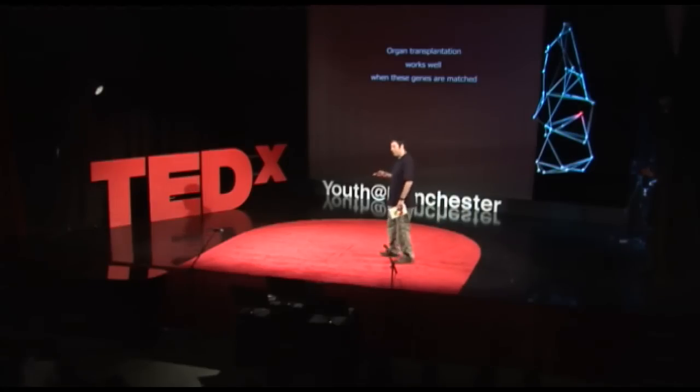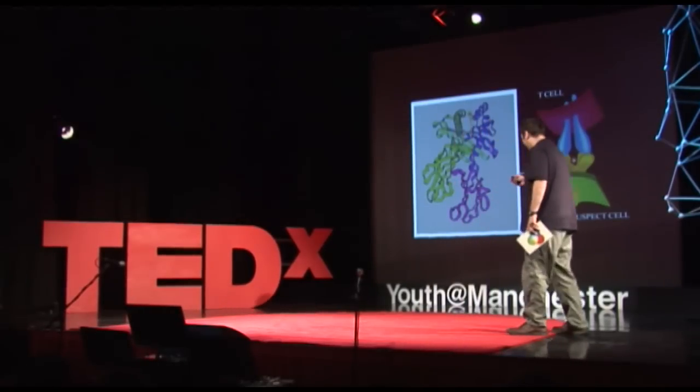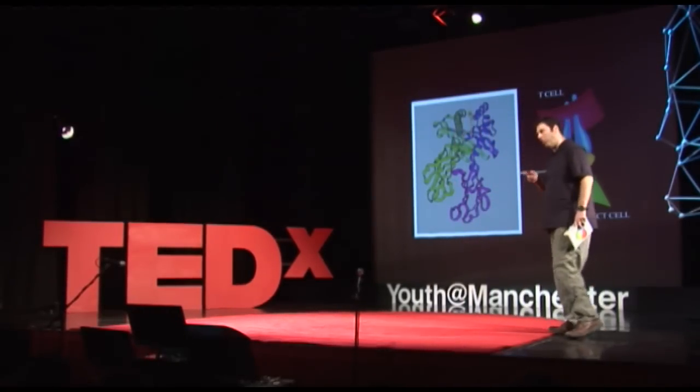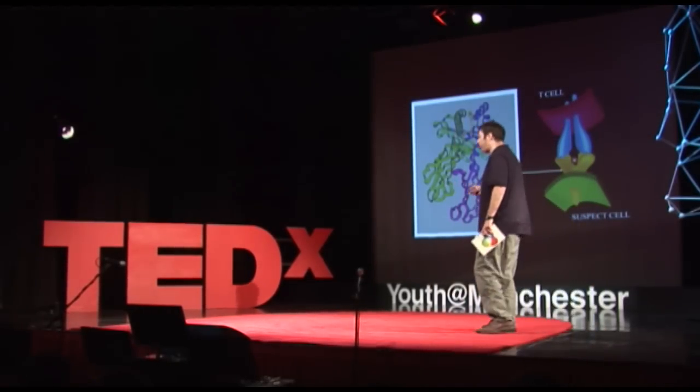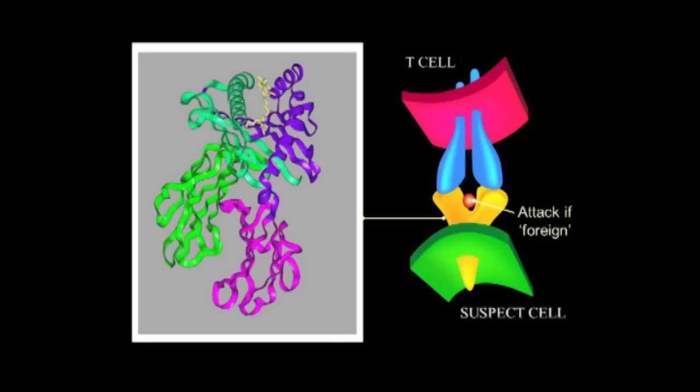Organ transplantation works well when these genes are matched. Right, but the role of these genes in the human body can't be to do with making life difficult for transplant surgeons. The question is what do these genes really do? So that is an adventure that has taken us the last 60 years to understand. This is the bit of science about what these genes really do. The genes that vary the most between you and me and each person in this room make this molecule here. This is a protein molecule and it is on the surface of nearly all of your cells.